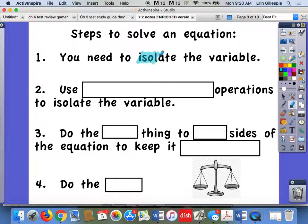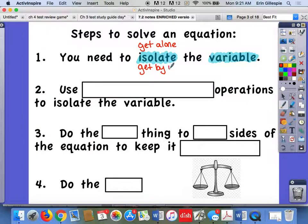And what does isolate mean? Well, isolate means get it alone, get it by itself. You might want to write in one of those. So in other words, you're going to have just x on one side of the equal sign, because then that will tell you that x equals what it ought to be.